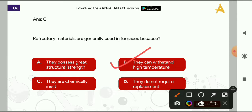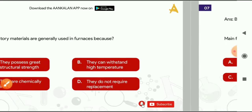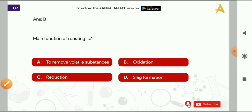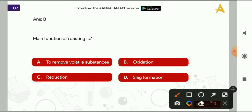Next question: the main function of roasting is? Options are: to remove volatile substances, oxidation, reduction, or slag formation. The correct answer is option A, that is to remove volatile substances.